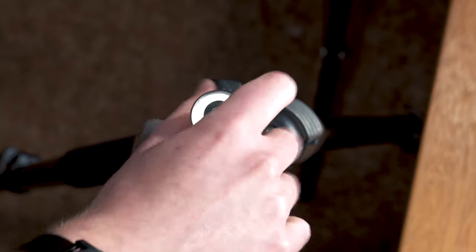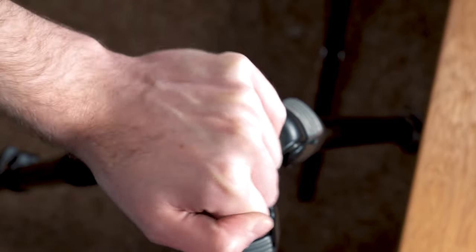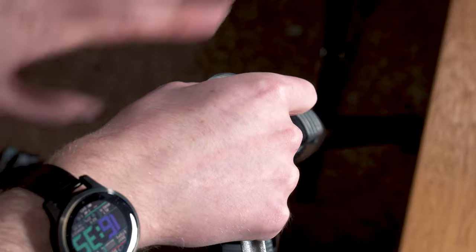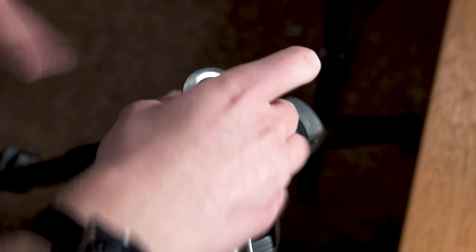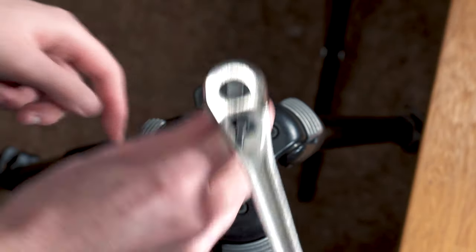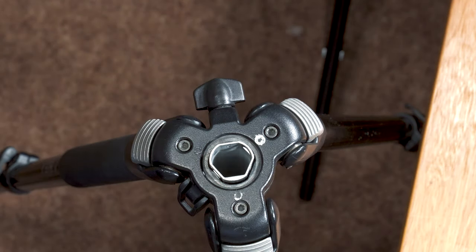I'm sure there's a torque spec for it, but as long as you just have it nice and snug, you know, give it where giving a little tug doesn't turn it any further, that should do. And what that does is it spreads those wedges apart so that they clamp up against the walls of the center tube. And then of course, just flip the column back over and you should be good to go.